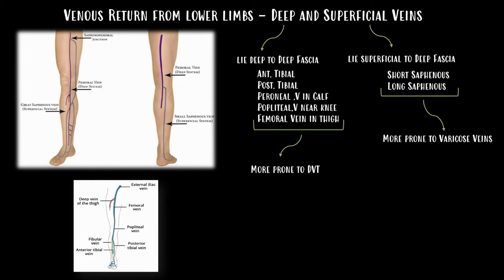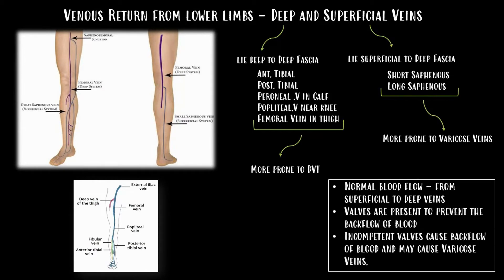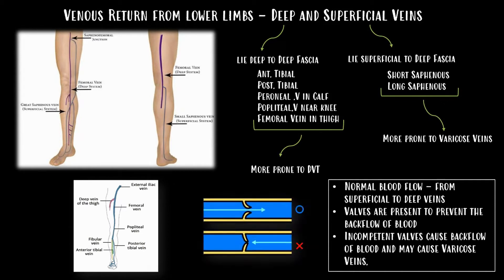Normal blood flow occurs from the superficial veins to the deep veins. Valves are present to prevent the backflow of blood. Incompetent valves will cause backflow of blood and may lead to the formation of varicose veins.